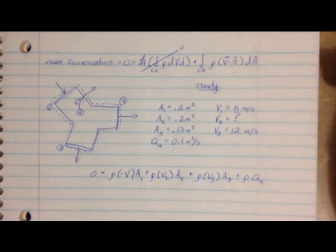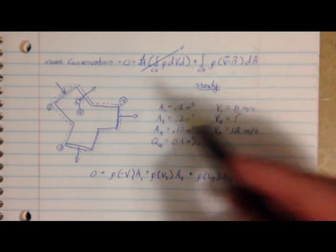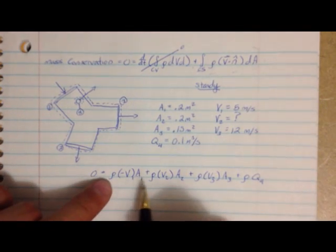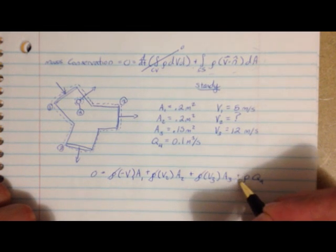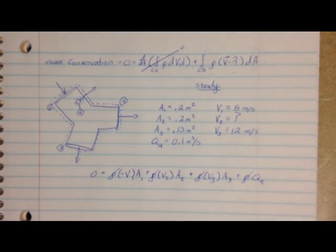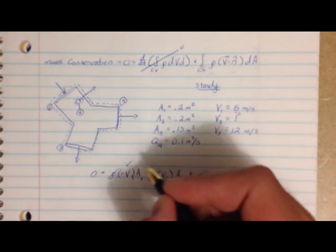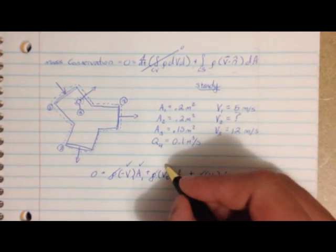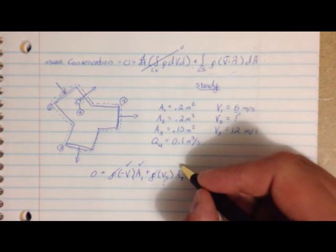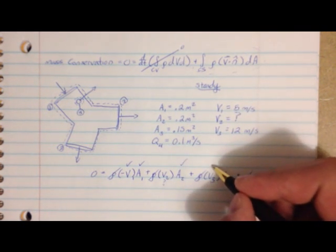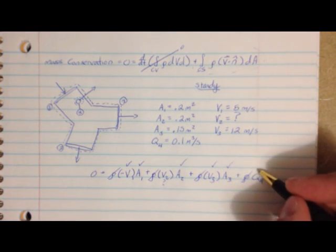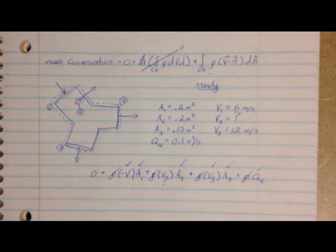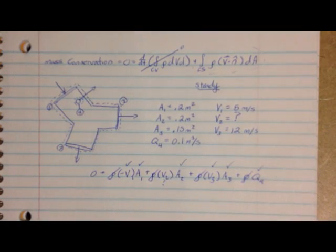This is going to be an incompressible flow, because all of our densities are going to be the same. So we can just take out all of the rho terms. Now we have V1, A1, V2, A2, V3, A3, and Q4. Now all we're going to do is rearrange the equation to find V2.